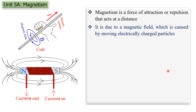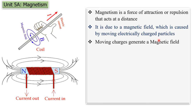This force of attraction or repulsion is due to magnetic field. Magnetic field is caused by moving electrically charged particles. So when electrical charged particles are in motion, there is a generation — there is production of magnetic field. So the basic reason for generation of magnetic field is nothing but moving charges.